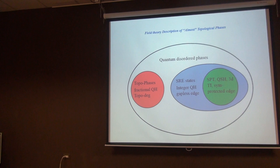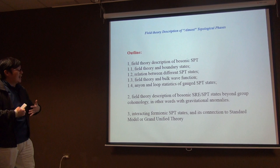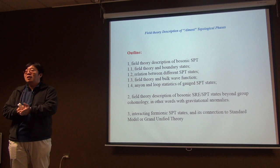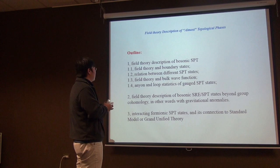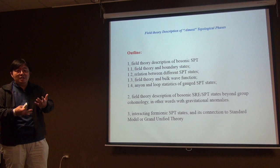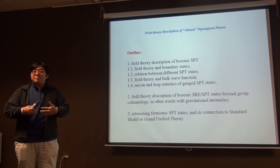The big picture: the large set of quantum disordered phases contains mostly trivial direct product states. Topological phases (fractional quantum Hall, toric code) have non-trivial bulk spectrum and bulk topological degeneracy. 'Almost topological' phases — short-range entangled states and SPT states — have trivial bulk spectrum but non-trivial boundary spectrum. Invertible topological order refers to SRE states that are not SPT, like the integer quantum Hall state and the E8 state.